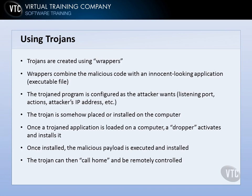The Trojan program is configured however the attacker wants — the port it's going to listen on, the actions it's going to take, the IP address it needs to phone home to, and so forth. Then the Trojan somehow has to get onto the computer, either placed by an unsuspecting user, downloaded automatically from the web, or on an infected USB stick. Once it gets there, the Trojan application is loaded, sometimes the user double-clicks and runs it, and then something called a dropper activates the Trojan and installs it — that's basically the installation program for the malware itself. Once installed, the malicious payload is executed and written to the system.